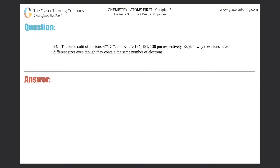Number 84: the ionic radii of the ions S²⁻, Cl⁻, and K⁺ are 184, 181, and 138 pm respectively. Explain why these ions have different sizes even though they contain the same number of electrons.